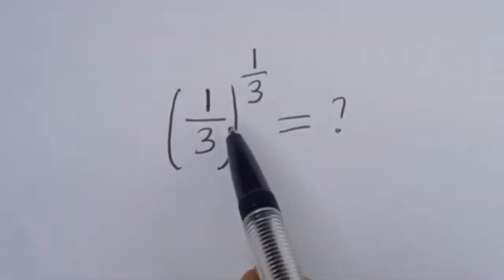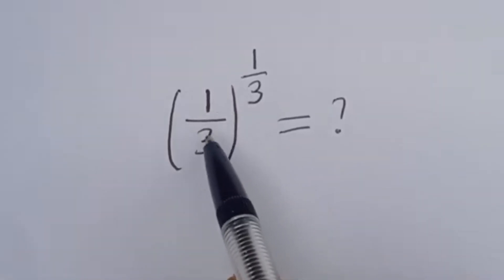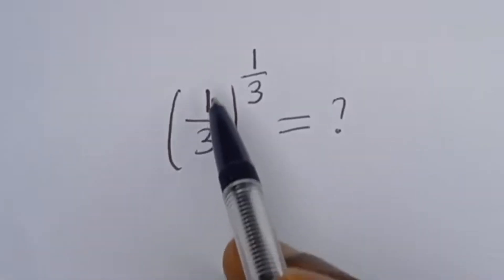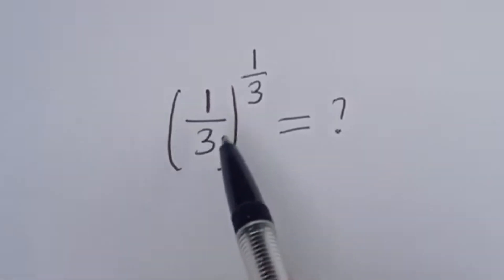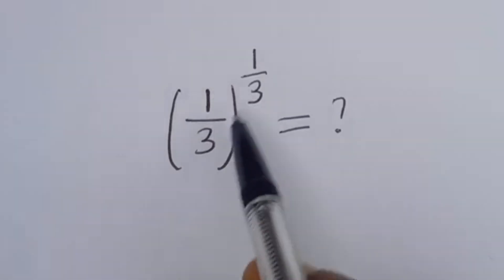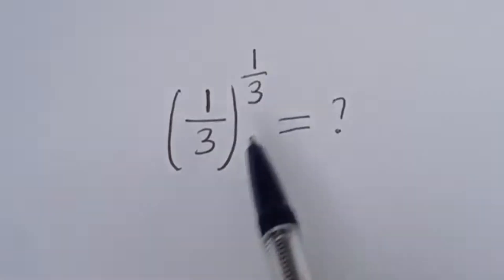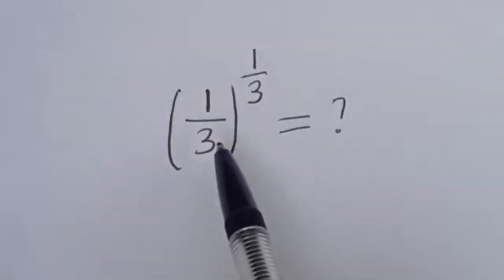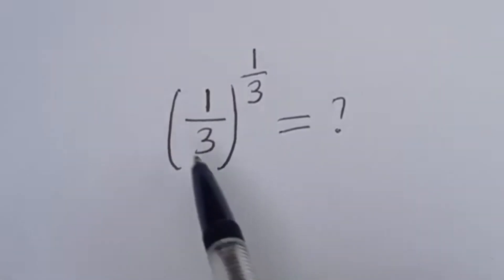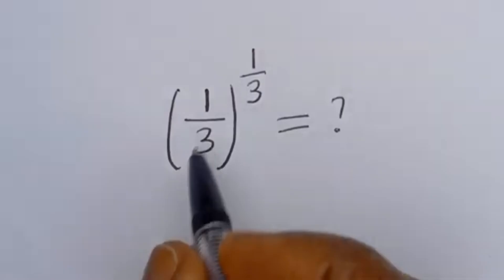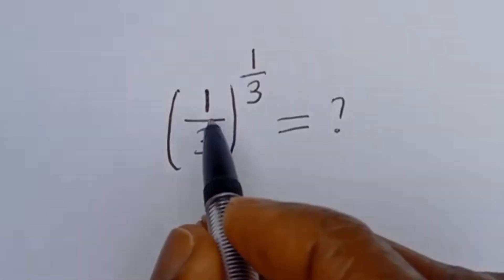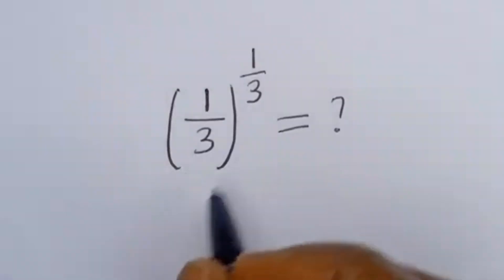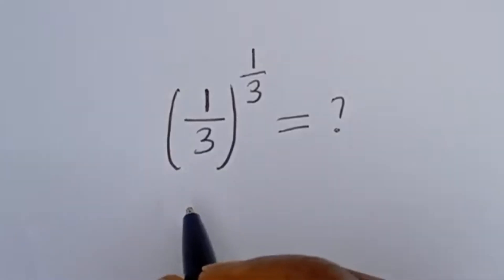Hello. How to simplify this nice math problem without using a calculator: 1 divided by 3 to the power of 1 divided by 3. We are going to perform a trick here, just watch.